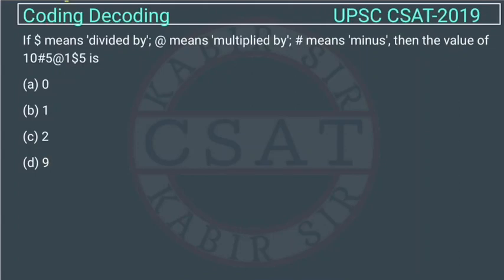This is a question of reasoning from chapter coding and decoding asked by UPSC in their CSAT paper of 2019. If dollar sign means divided by, at the rate sign means multiplied by, and hash sign means minus, then the value of this is...